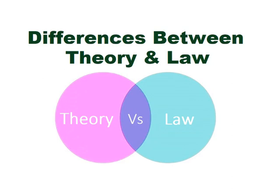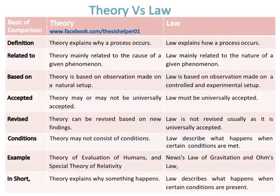Differences between theory and law. Theory versus law. Theory explains why a process occurs, whereas law explains how a process occurs. Theory is mainly related to the cause of a given phenomenon, whereas law is mainly related to the nature of a given phenomenon.